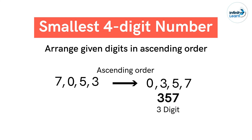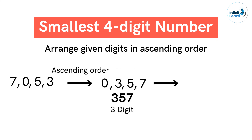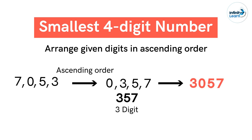To make it a four-digit number, we exchange 0 for the next greatest digit. So we get the sequence 3, 0, 5, 7. Thus the number formed is 3057, which is a four-digit number. It is also the smallest number that can be formed using the digits 7, 0, 5, and 3. Thank you!